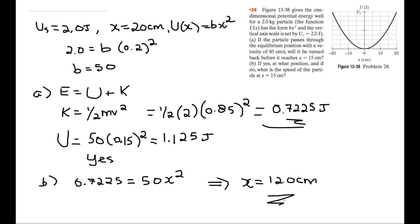And solving for x, this gives us 12.0 cm. So this is the position where the particle will be turned back, the amplitude of the motion, if the velocity at equilibrium position is 85 cm per second.